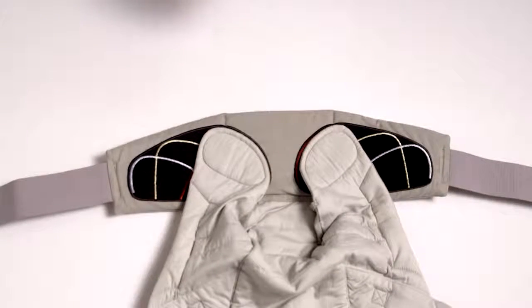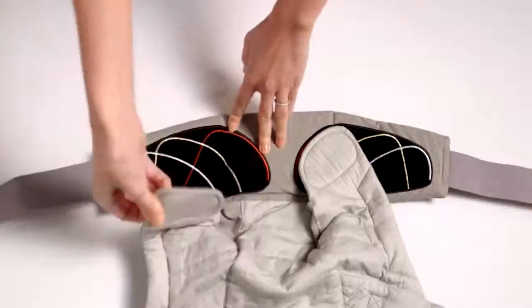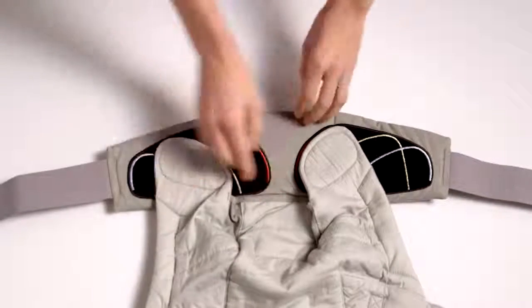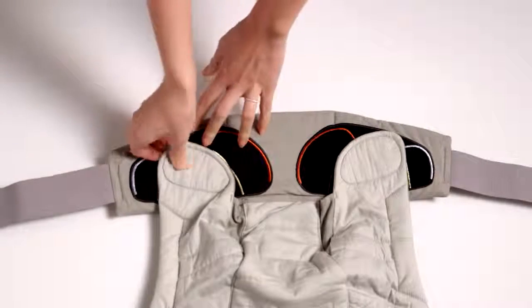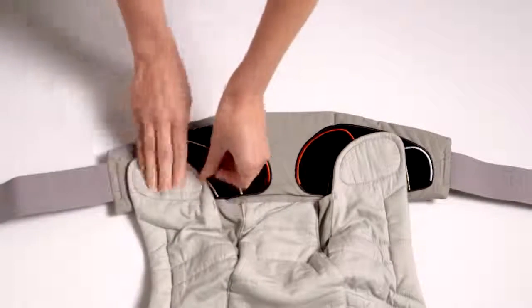When baby is around three months old, you will move the tabs to the medium setting following along the yellow lines. Attach along the blue lines when baby is around nine months old.